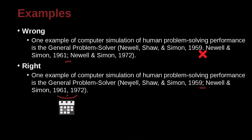So again: Newell, Scholl, and Simon — here we use the ampersand. This is their paper, 1959. Semicolon. Newell and Simon is a different paper, 1961, and another paper is 1972. We can put those years together separated by a comma.